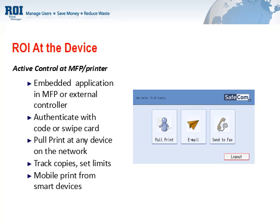In addition to tracking and management capabilities, ROI at the Device offers pull or follow-me printing capabilities, where an end-user sends a job from their desktop or laptop to a secure print server that sits on your network.